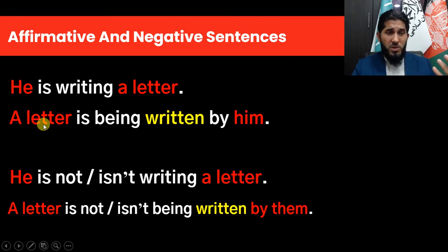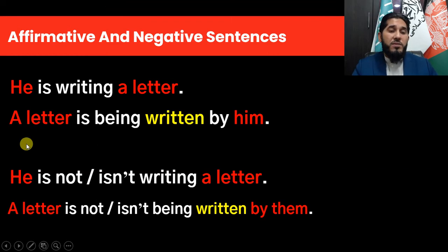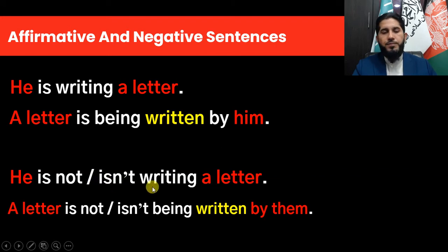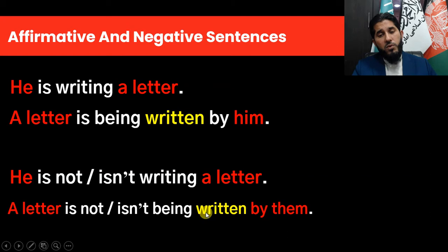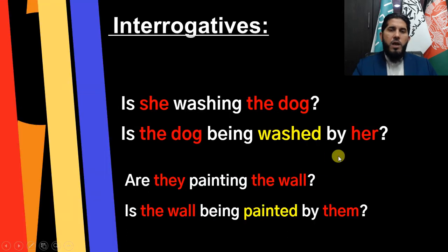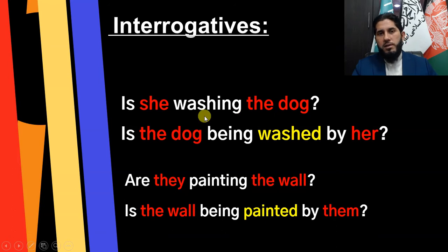The subject 'he' is the doer of the action, therefore it is active form. In 'A letter is being written by him,' the subject 'a letter' is the receiver of the action, so it is passive form. For negative sentences, look at this example: 'He is not writing a letter' or the short form 'He isn't writing a letter.' In passive: 'A letter is not being written by him' or 'A letter isn't being written by him.'